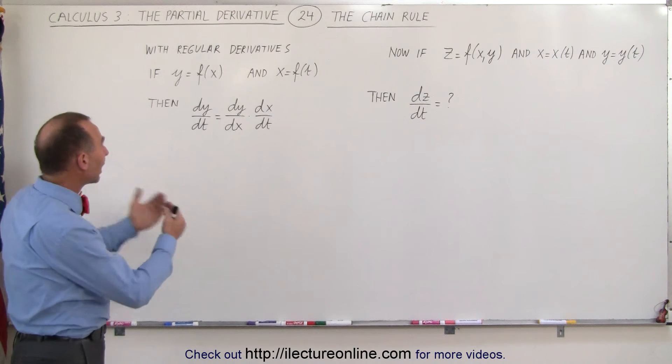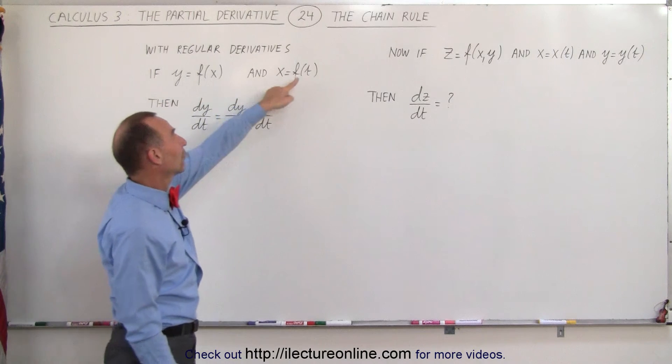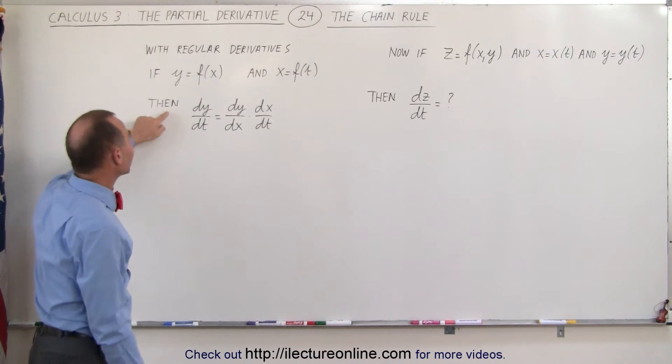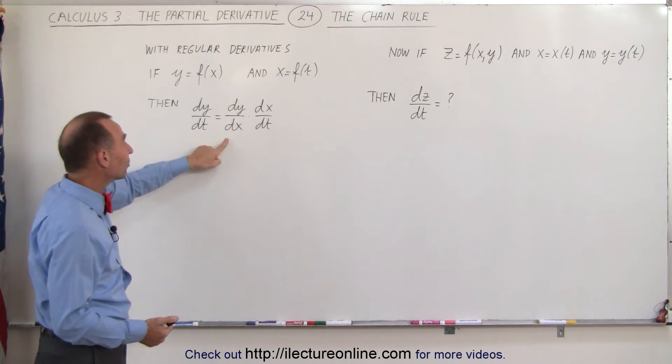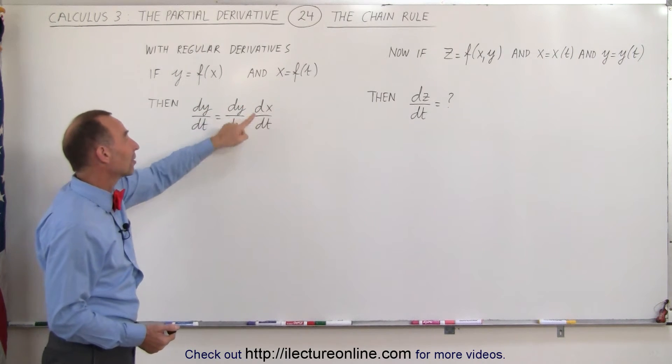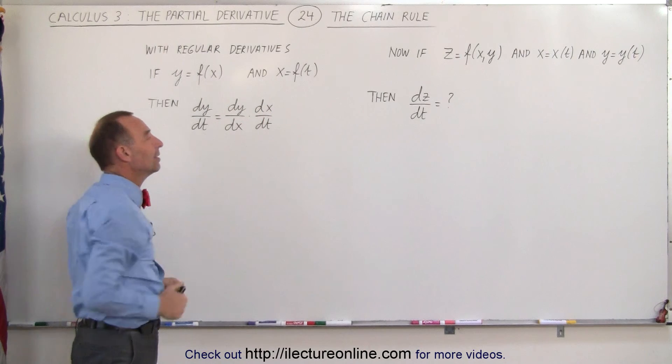When we go back to regular derivatives, let's say that y is a function of x and x is a function of t, and we're trying to find dy/dt. That can be found by taking dy/dx and multiplying that times dx/dt. Notice the dx cancels out and we get dy/dt.